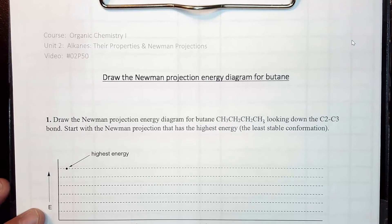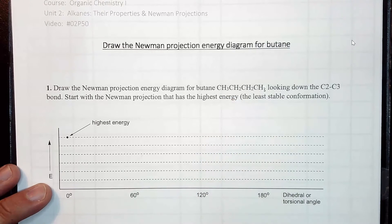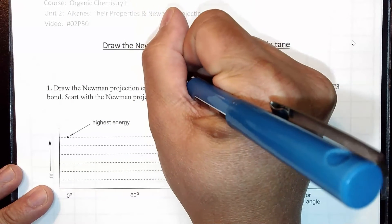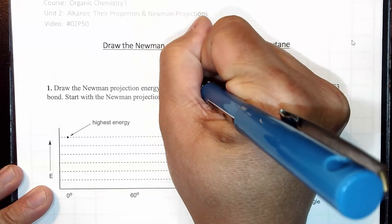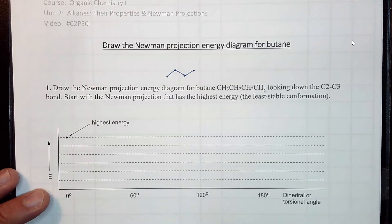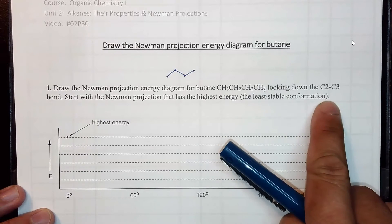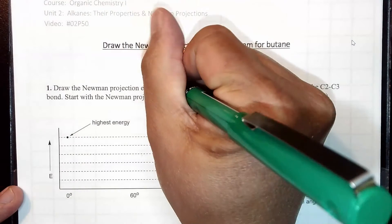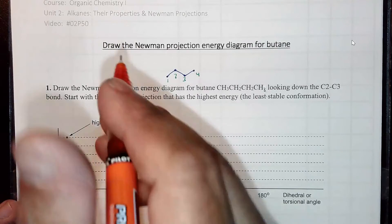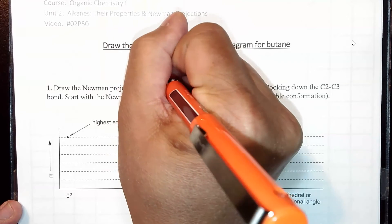For this problem, you want to first draw butane: CH3-CH2-CH2-CH3. Let me draw it up here. I'm going to draw a zigzag. And what I want to do is I want to figure out my point of view down the C2-C3 bond. So when we number this butane, we have 1, 2, 3, 4. And to look down the 2-3 bond, I'm going to put my eyeball where this stick figure is. Very excited.